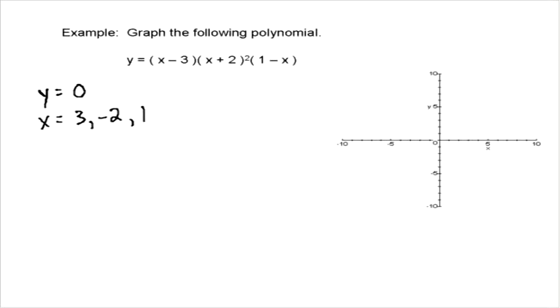So what we can do in our graph is put those points on our graph. We know something's going to happen at x equals 3, at x equals 1, and at x equals negative 2.